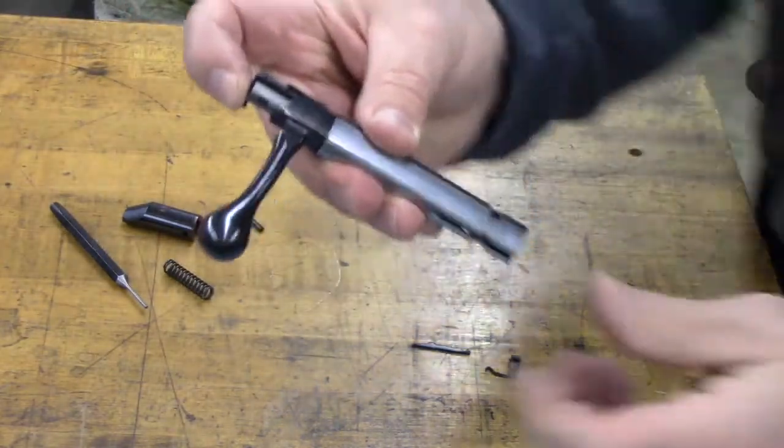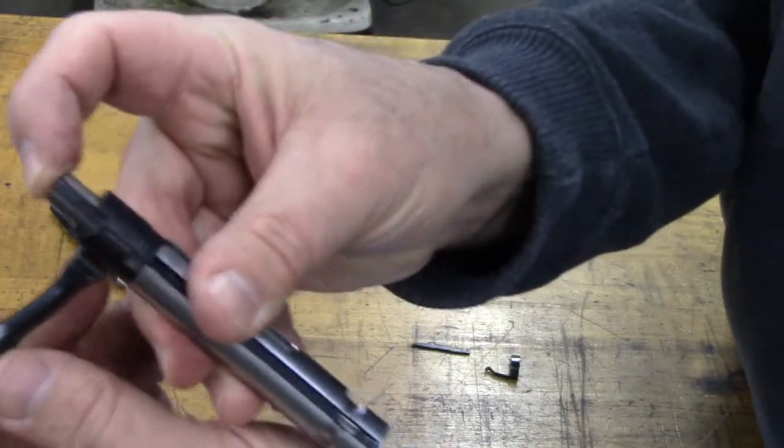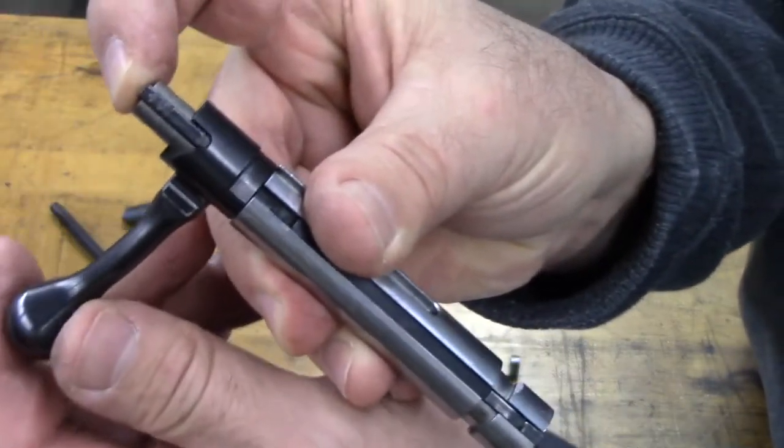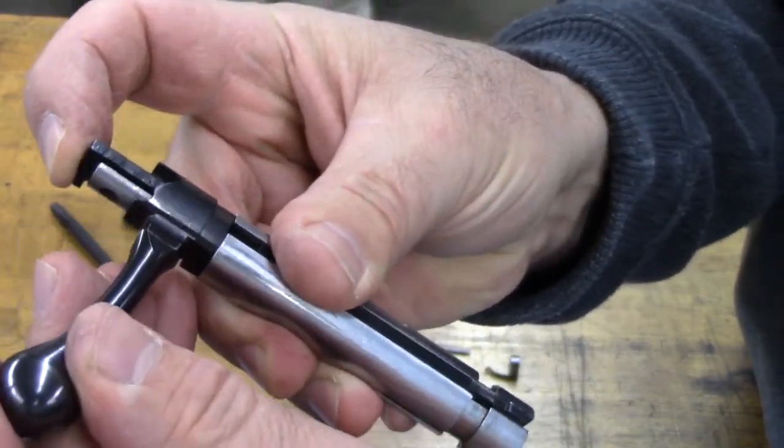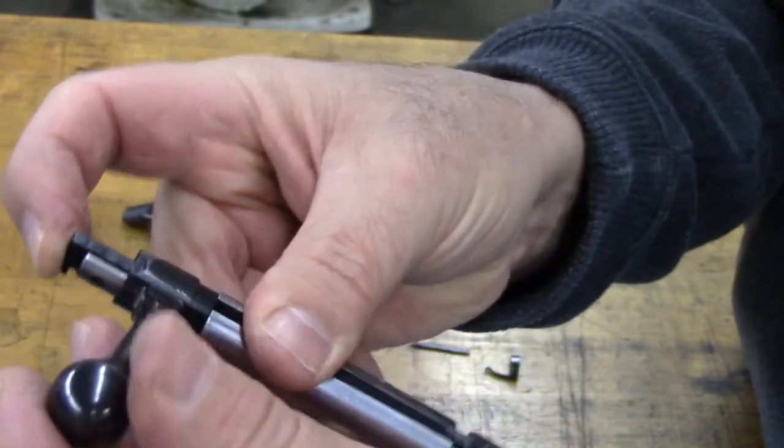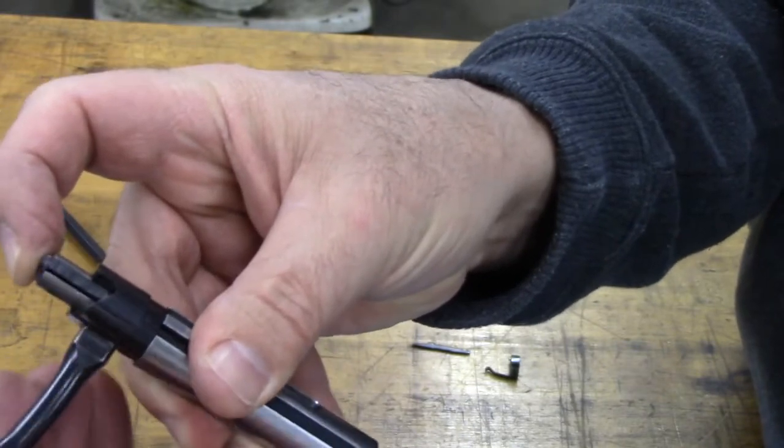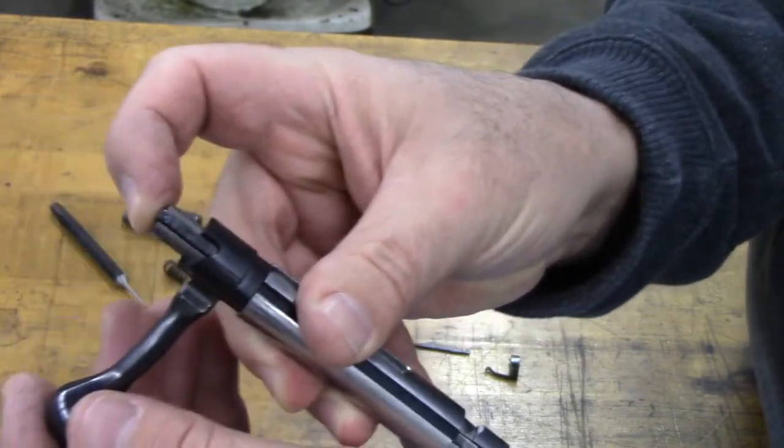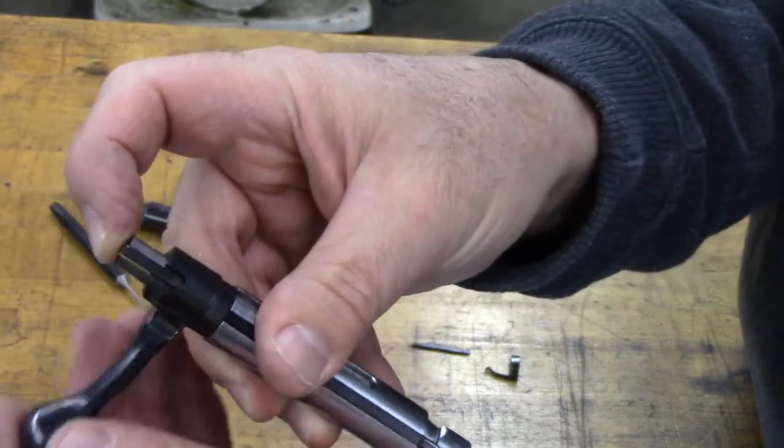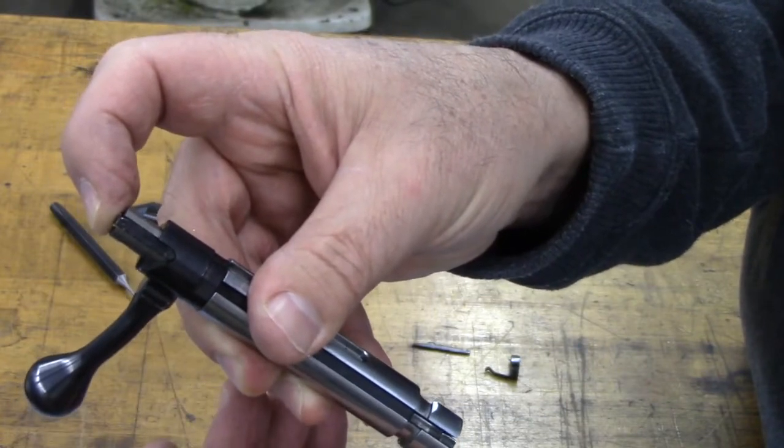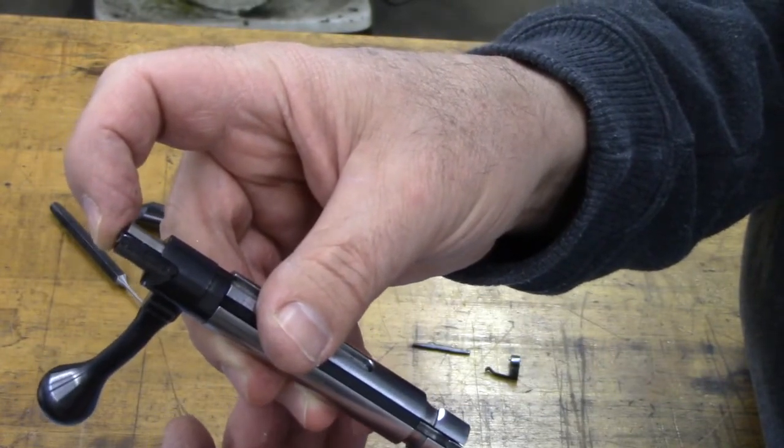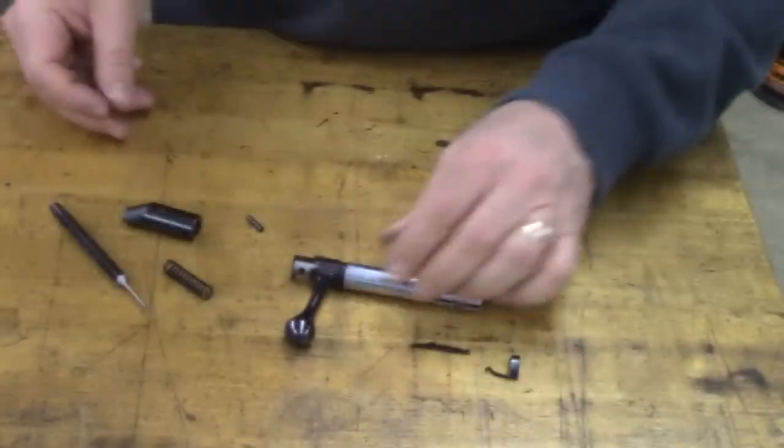And that slides together like that. Now, just to double-check, your cocking piece should be riding back and forth like that. It's easy to do because I don't have the spring assembled on it yet. If it's not looking like that, double-check to make sure you've got everything lined up properly. Okay, that's together.